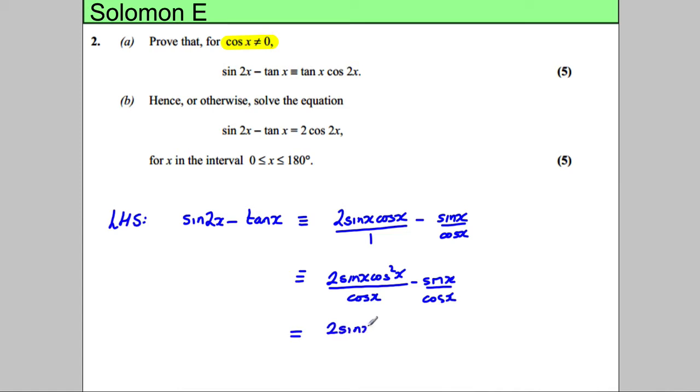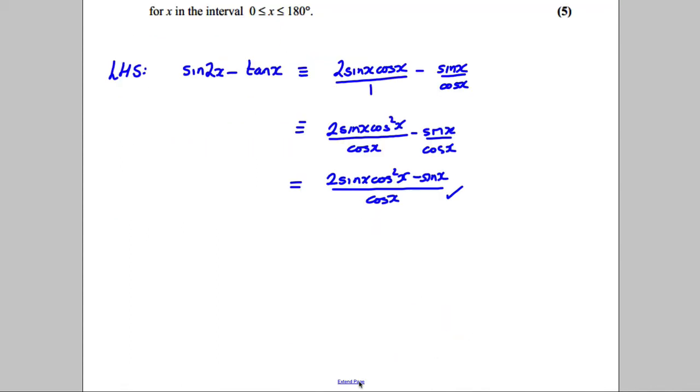I'd have 2 sine x cos squared x subtract sine x divided by cos x. Now, the reason cos x can't be 0 is because I've got it on the denominator there. Then, I could factorize the sine x from the top.